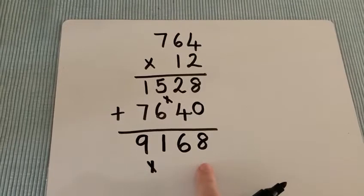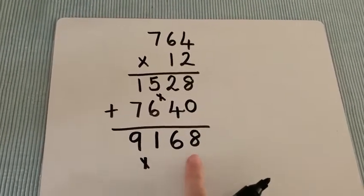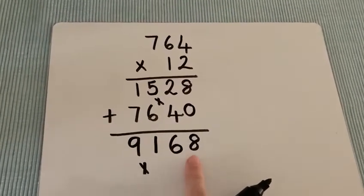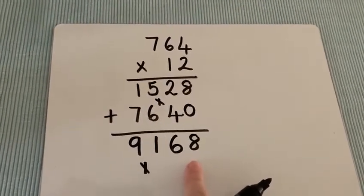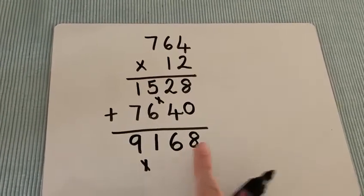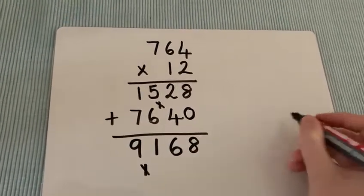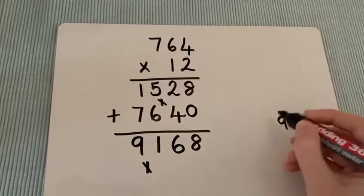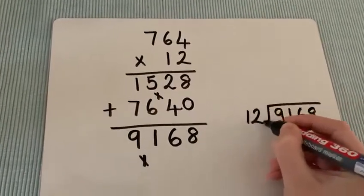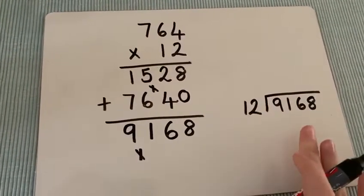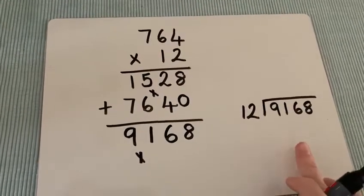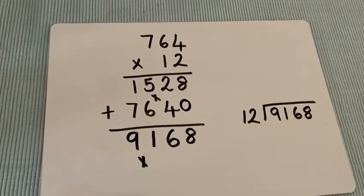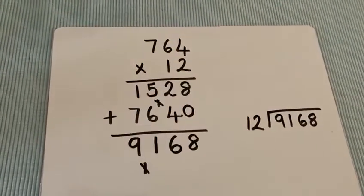9168. What we can do now is check that we've got this correct. So we could use inverse to check this. 9168. In order to do that, we'd be looking at doing 9168 divided by 12. Go ahead, you have a go at practicing your long division skills to check whether or not we got the correct answer. You should be looking for 764.